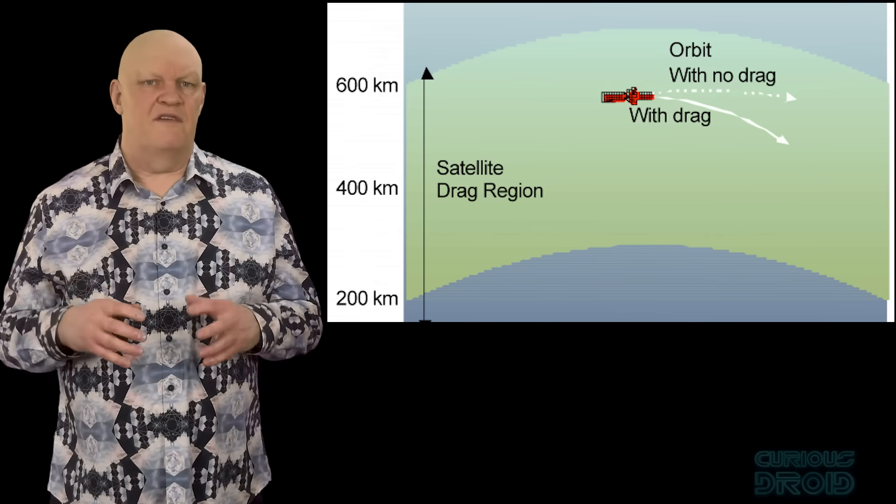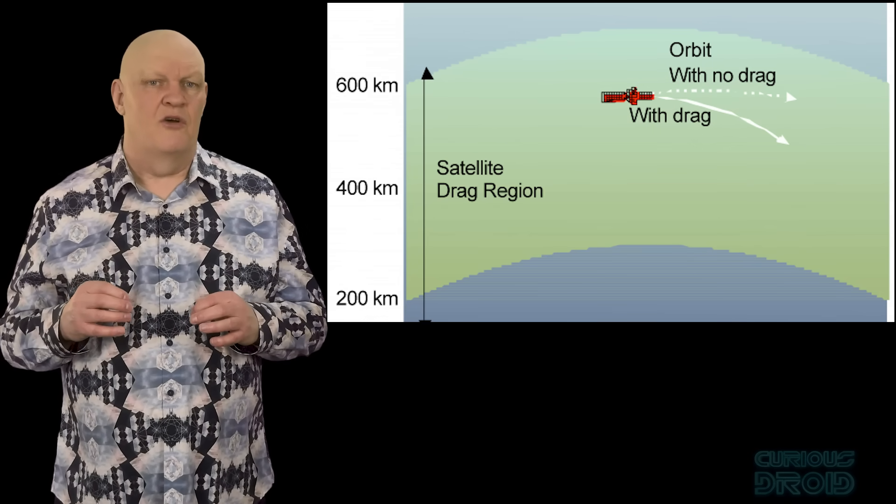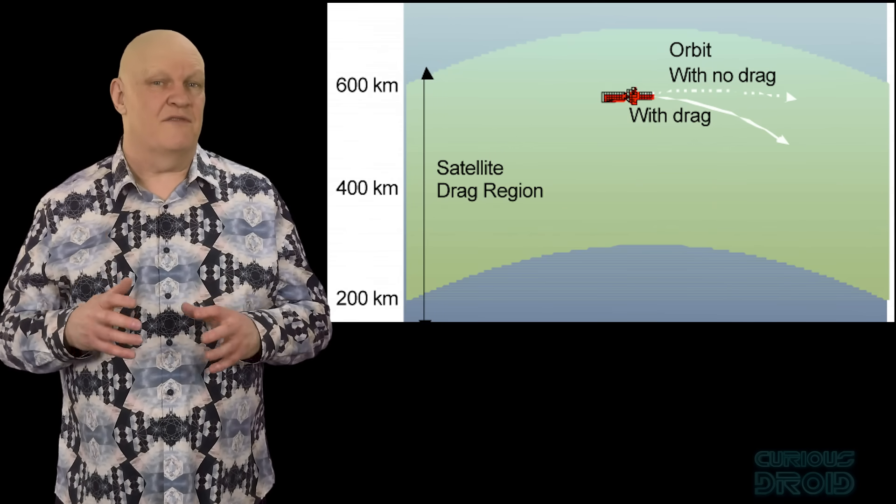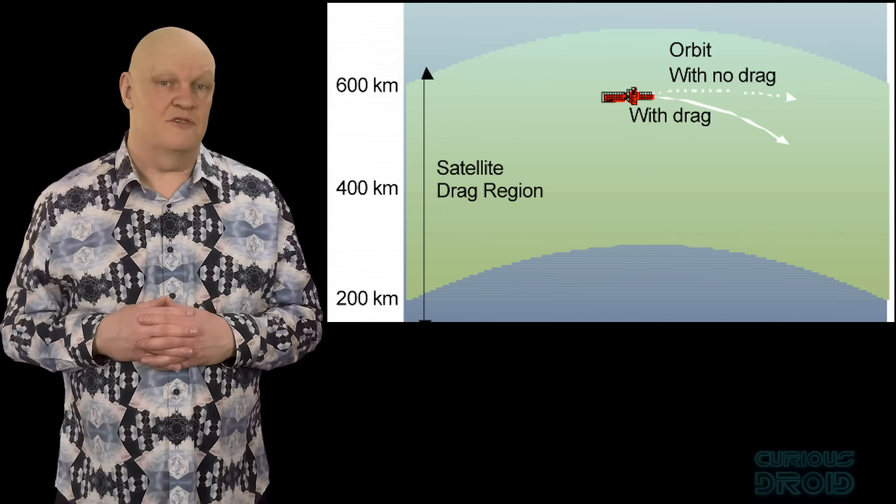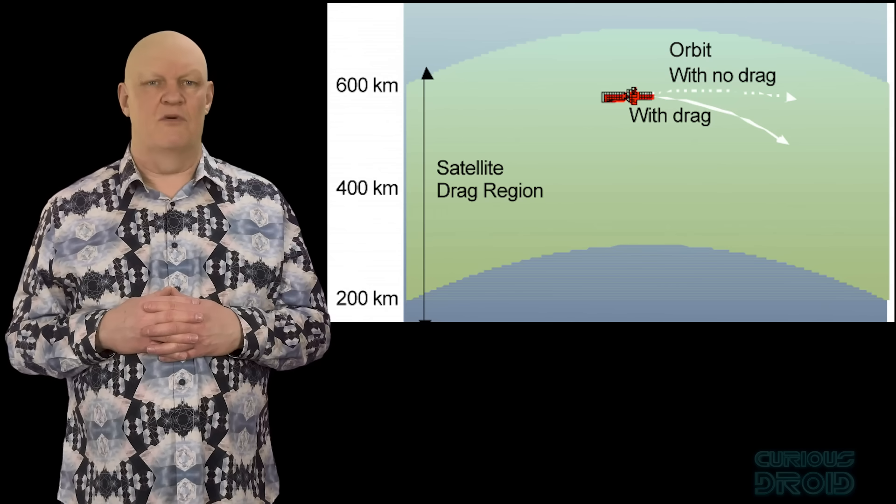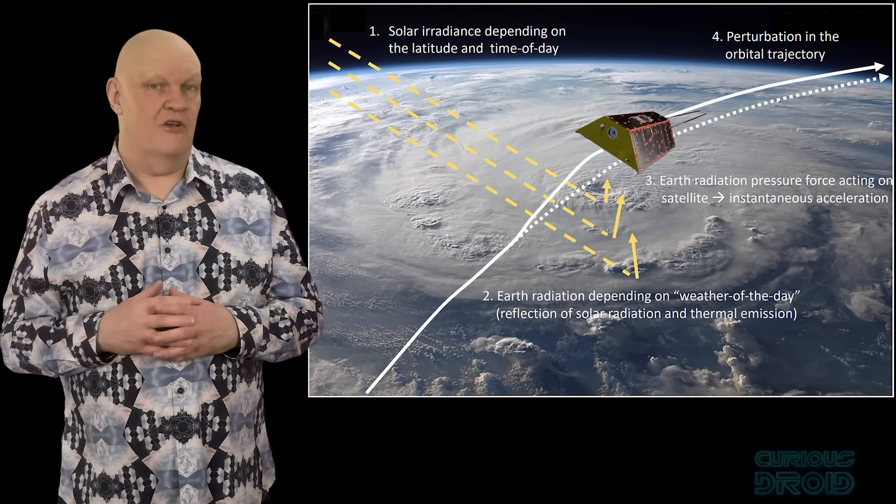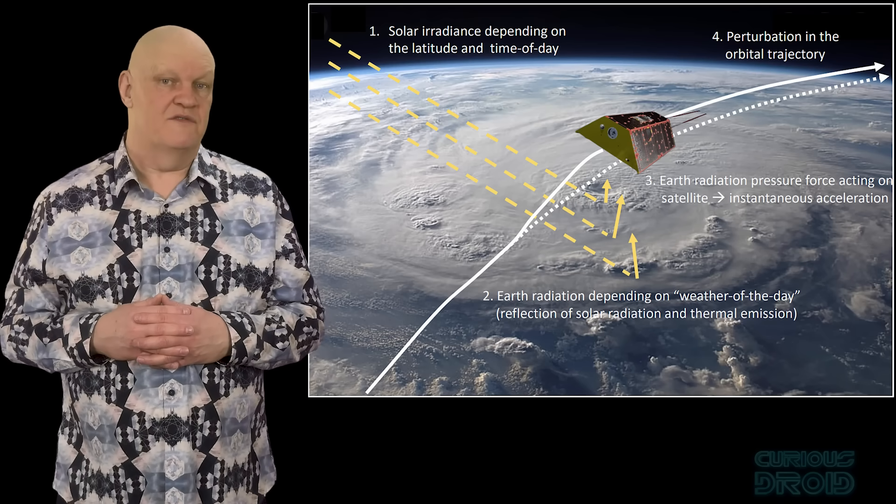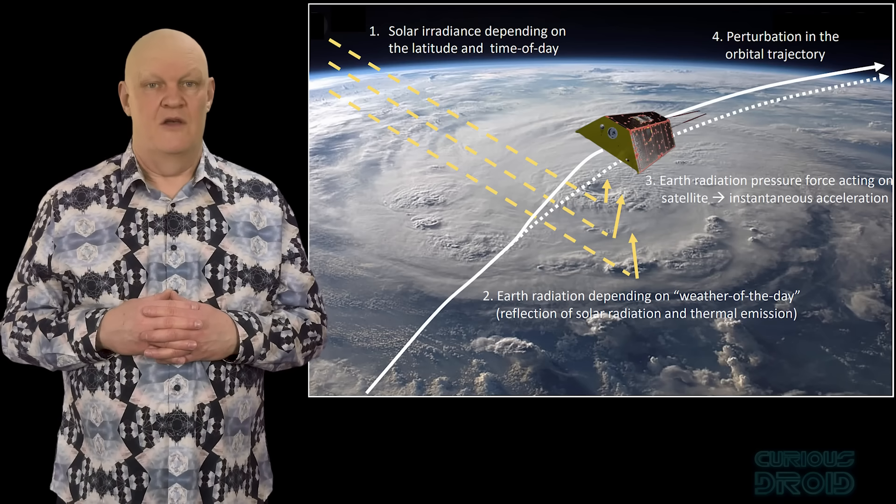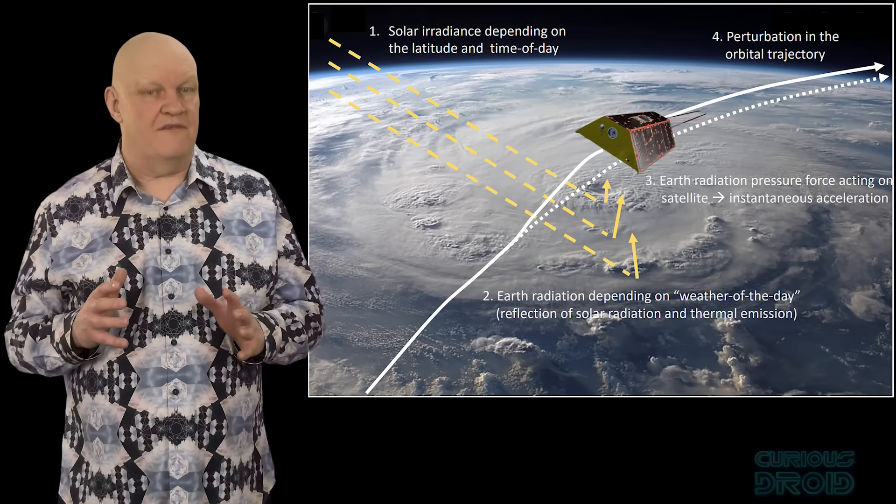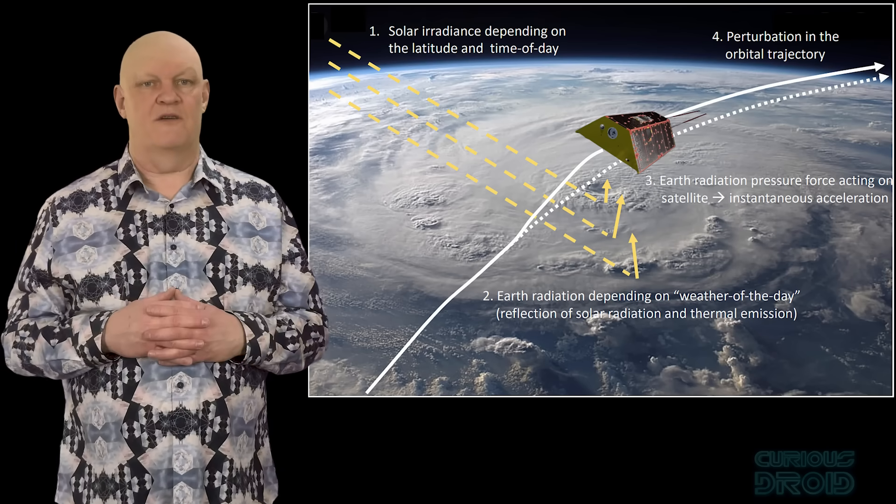One of the main things that the Vanguard missions helped to discover was that the effect of atmospheric drag up to 800 km was the largest perturbing force, and above 800 km, solar radiation pressure was the largest perturbing force. Both of these are strongly affected by the solar cycle.